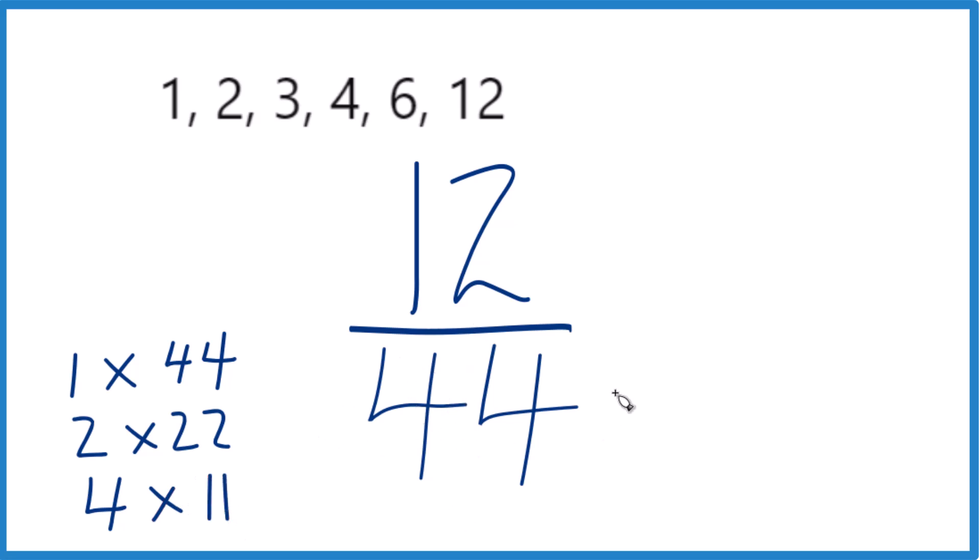So what is the greatest common factor between 12 and 44? If we look here, 1, 2, yes, 3, no, 4, that's a common factor. And that looks like the greatest common factor, 4.